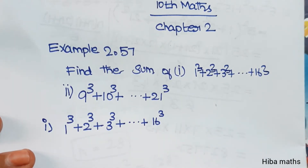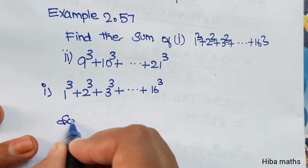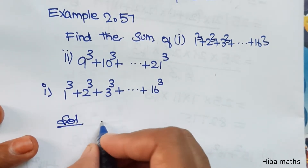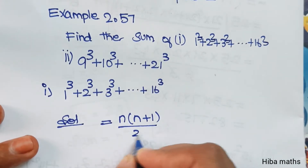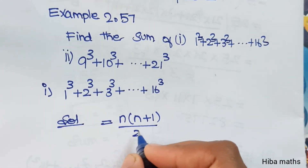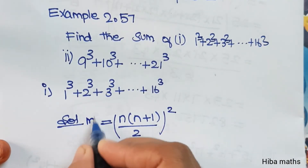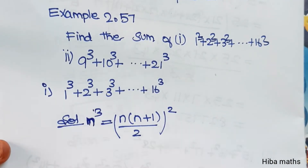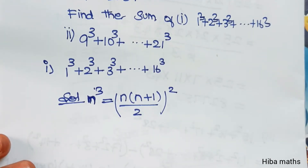Now let's apply the formula for sum of cubes of natural numbers. There is a formula for natural numbers. The sum of 1 cube plus 2 cube and so on uses a standard natural number formula. The result is a perfect square.